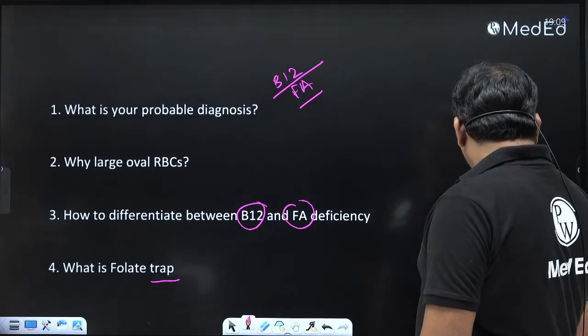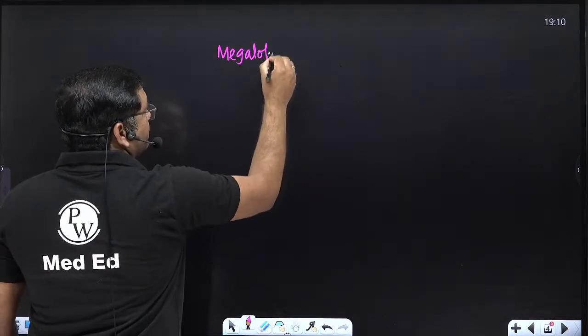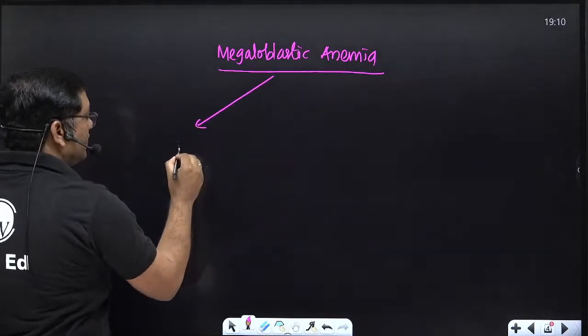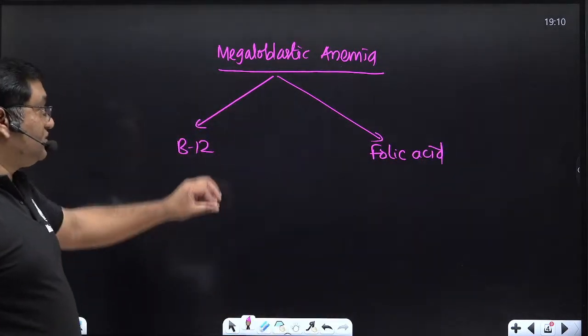This is megaloblastic anemia because there are large oval RBCs in the picture and MCV — mean corpuscular volume — is raised. Decreased hemoglobin reduces the MCH, and larger RBC size means raised mean corpuscular volume. Raised MCV means megaloblastic or macrocytic RBCs. The two important biochemistry causes of megaloblastic anemia are B12 deficiency and folate deficiency (folic acid, B9).